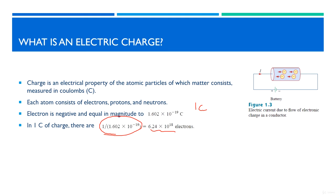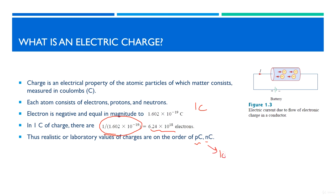In actual life, the values of charges are on the order of picocoulombs or nanocoulombs. Nano is 10⁻⁹ and pico is 10⁻¹², as discussed in the SI units. So these are the actual practical values of our coulombs or electrons.